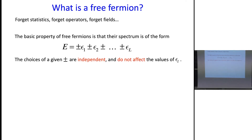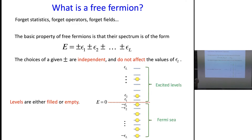Pretty much every Bethe-ansatz solvable system, you write the spectrum in this form, but changing one of these signs will change the values of epsilon. But in this case, there's just one choice of epsilon for the system, provided you specified the boundary conditions. There's this nice picture everybody's probably seen: you draw the Fermi sea, fill all the negative energy levels — that's the ground state — and then changing a sign to plus moves it up, giving other energies.